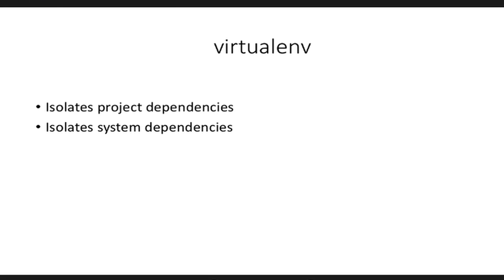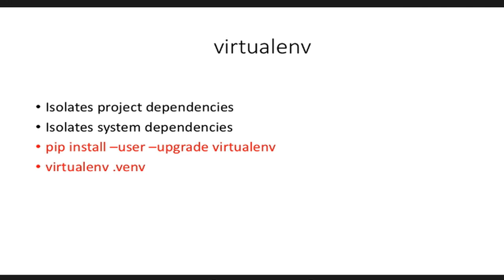Creating a virtualenv is very simple: pip install --user --upgrade virtualenv. And to activate the virtualenv, it's just this command. Virtualenv, like pip, is now actually a part of Python — it's called venv and is available in Python 3 out of the box. When you create a new virtualenv, you are essentially creating a copy of the Python binary (the CPython interpreter), a copy of the entire Python standard library, a copy of pip, as well as a copy of the site-packages.